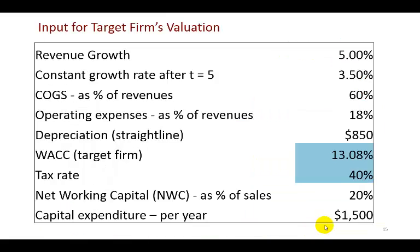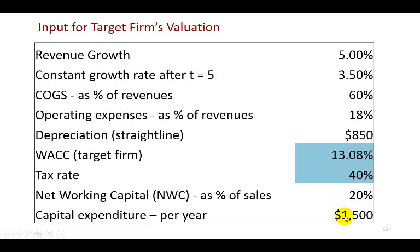In this example, revenues will grow at an annual rate of 5%. Beyond five years, we assume a constant growth rate of 3.5%. Cost of goods sold as a percent of revenues is projected at 60%, and operating expenses as a percent of revenues is 18%. Straight-line depreciation gives annual depreciation expenses of $850 per year over the next five years. Net working capital as a percent of sales is 20%, and capital expenditure per year is $1,500. The WACC is 13.08% and the tax rate is 40%.